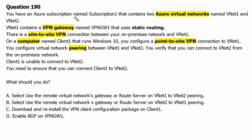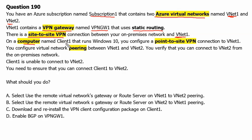You have an Azure subscription named Subscription1 that contains two Azure virtual networks named VNet1 and VNet2. VNet1 contains a VPN gateway named VPNGW1 that uses static routing. There is a site-to-site VPN connection between your on-premises network and VNet1. On a computer named Client1 that runs Windows 10, you configure a point-to-site VPN connection to VNet1.